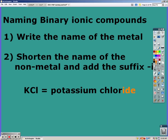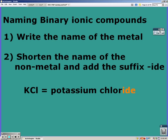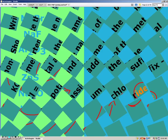If it's a binary ionic compound, it's made up of two elements. You write the name of the metal and then shorten the name of the non-metal with '-ide' at the end, assuming you know the charge of the metal. So it's just potassium chloride.